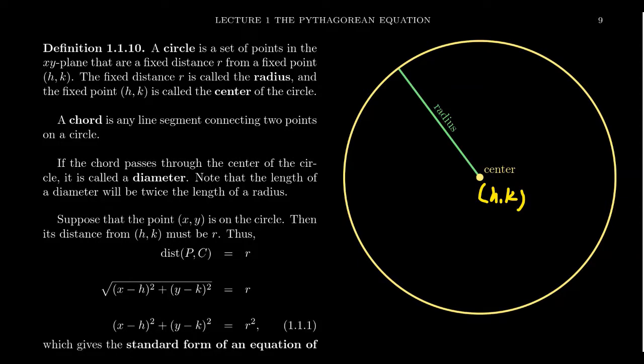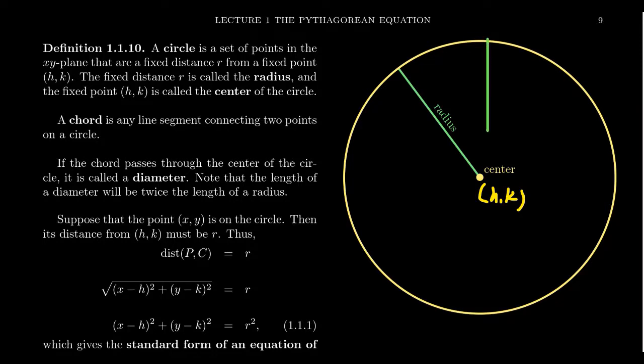Another bit of vocabulary: if you take a line segment that goes from one point on a circle to another point, this is called a chord. It's a line segment that cuts the circle into two pieces. Now if the chord goes through the center of the circle, this gives us what we call a diameter.